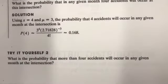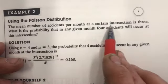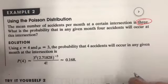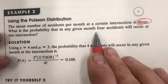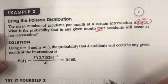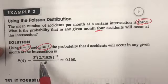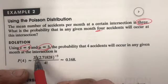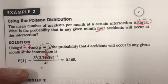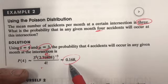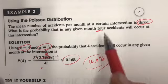Here's a Poisson distribution example: the mean number of accidents per month at a certain intersection is three. What's the probability that in any given month four accidents take place? So X = 4 and μ = 3. You compute: (3^4 · e^(−3)) / 4! = 0.168, which is a 16.8% chance of having four accidents instead of the usual three.